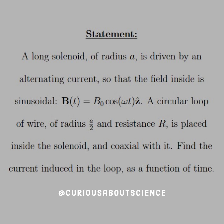The statement reads: A circular loop of wire of radius A over 2 and resistance R is placed inside the solenoid and coaxial with it. Find the current induced in the loop as a function of time.